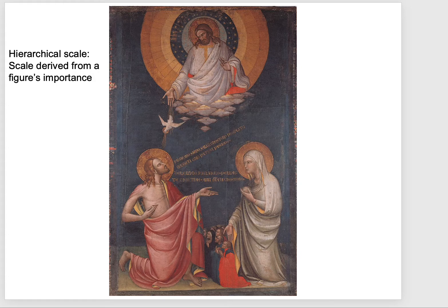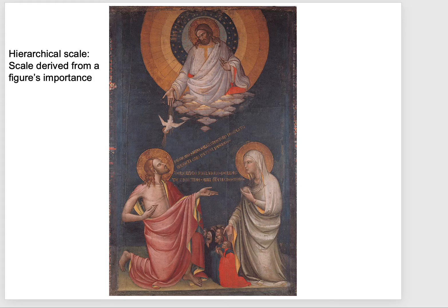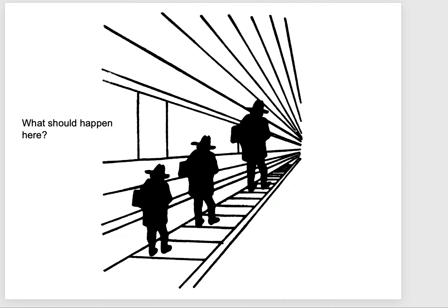Even though the image on the right is kind of impossible — especially with that waistline — we tend to make sense of it because it relates to our own personal scale and proportion in the world. Hierarchical scale does not reinforce the idea of illusion, but what it does is tell us who's important in the image. Here in Christian iconography we have God the Father, the Holy Spirit, Jesus as man, and the Mother Virgin. This medieval image by Lorenzo Monaco is telling us where we need to look and ultimately who is more important than the others.